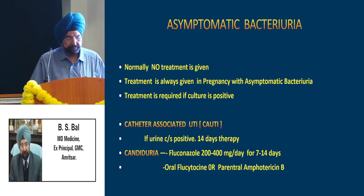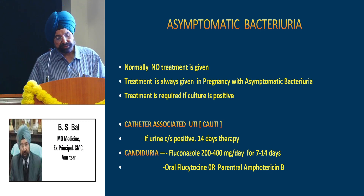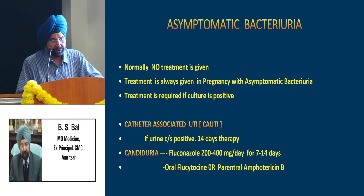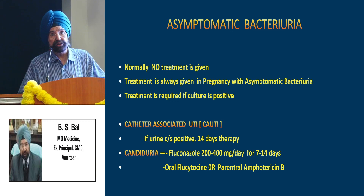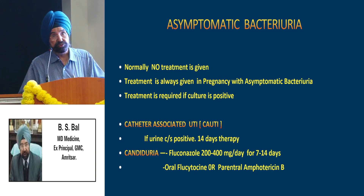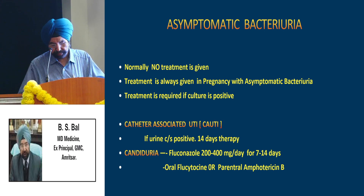Asymptomatic bacteriuria is the presence of bacteria in the urine without any symptoms. Normally no treatment is given, but there are two conditions in which it must be treated: pregnancy and infants or children. If culture is positive, treatment is required. For catheter-associated UTI, drugs are normally avoided but if culture is positive a 14-day course is required. There is no role for prophylactic antibiotics in a catheterized person. For candiduria, fluconazole 200 to 400 mg per day for 7 to 14 days — or other drugs like flucytosine or parenteral amphotericin B — can be added.